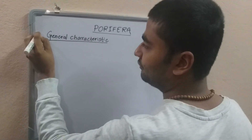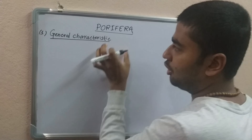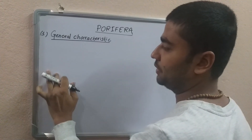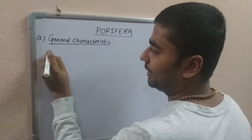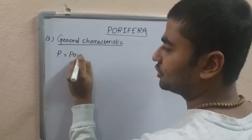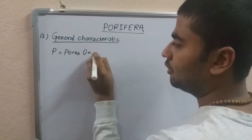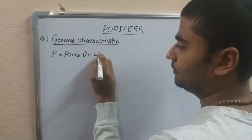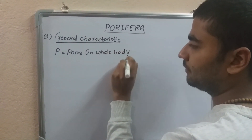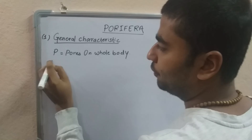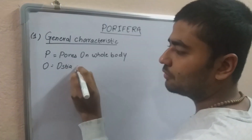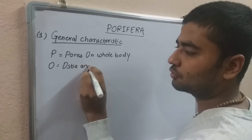The first general characteristic of Porifera: the name Porifera means 'porous body.' The body has pores — Ostia and Osculi — which are key structural features.